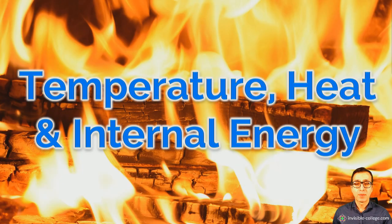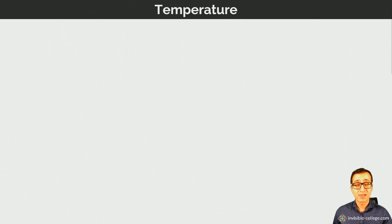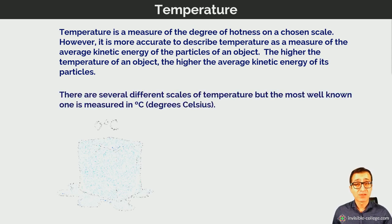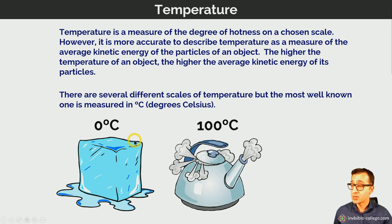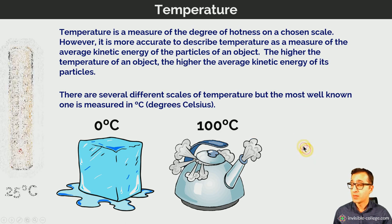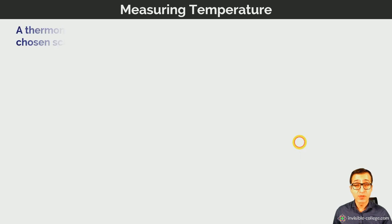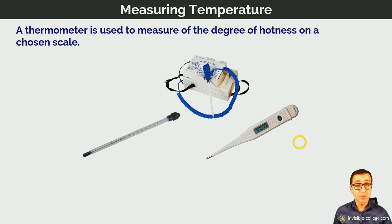Let's start by recapping what we know about temperature. Temperature formally is a measure of the average kinetic energies of the particles of a substance. Informally we can describe temperature operationally as the degree of hotness or coldness on a particular chosen scale. There are many different scales of temperature, including the Celsius scale, which is defined in terms of the freezing and boiling points of water. When we define temperature in an operational sense, we're relying upon properties of materials such as water and the temperatures at which certain things happen to those materials.